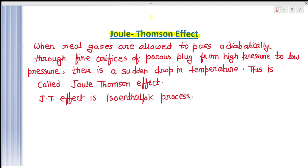What is the Joule-Thompson effect? When a real gas is allowed to pass adiabatically — adiabatically means in the whole process there is no exchange of heat from the system — through the fine orifices of a porous plug, from a high pressure region to a low pressure region, there is a sudden drop of temperature. The temperature of the system will decrease. This effect is known as the Joule-Thompson effect.